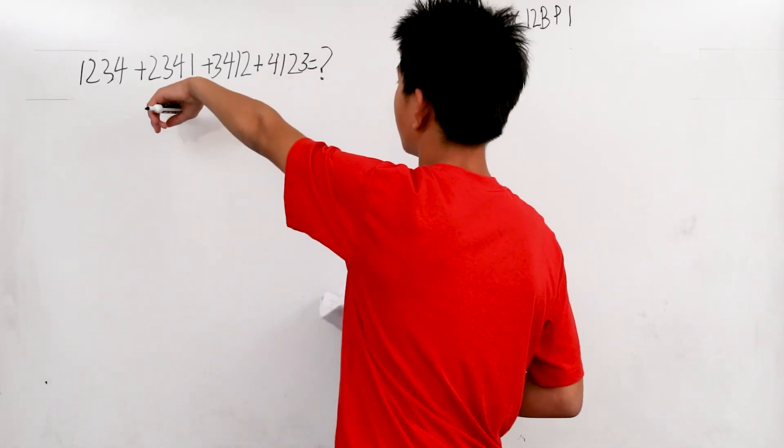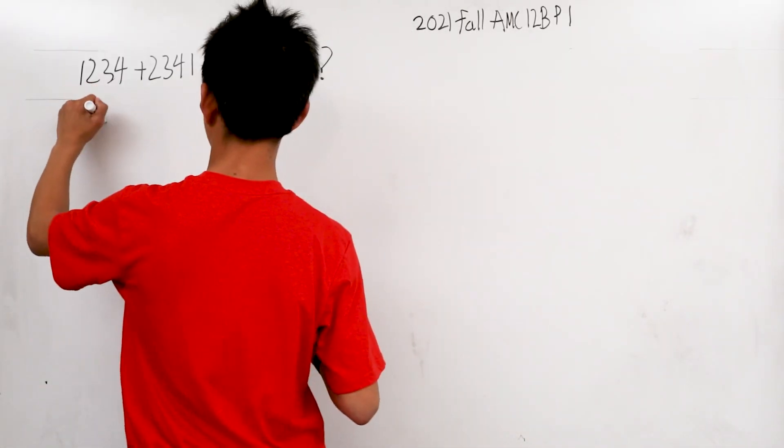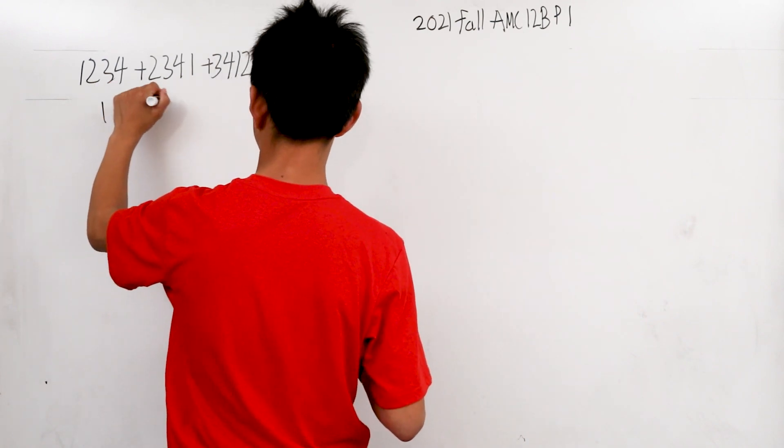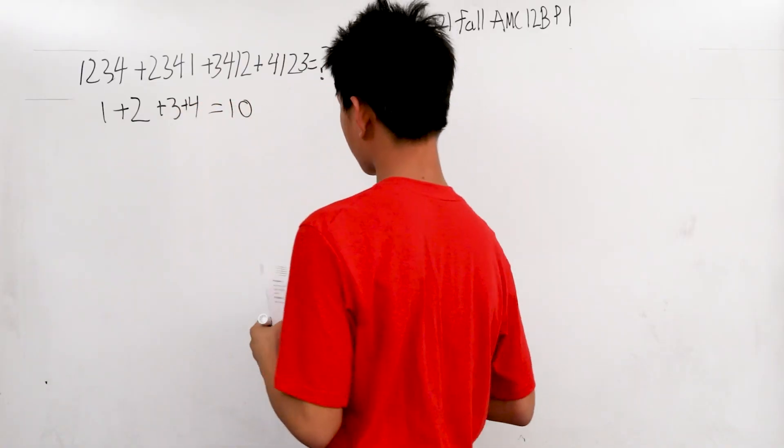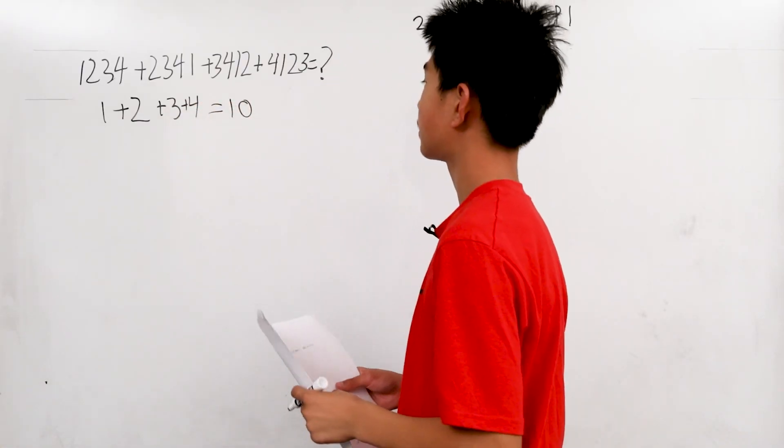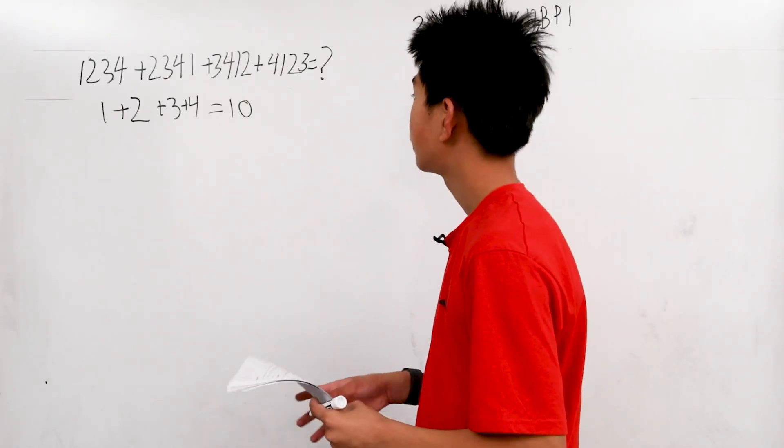And the sum of one plus two plus three plus four is ten. So we know that this is, well, it's got to be over ten thousand because one thousand plus two thousand plus three thousand plus four thousand is ten thousand.